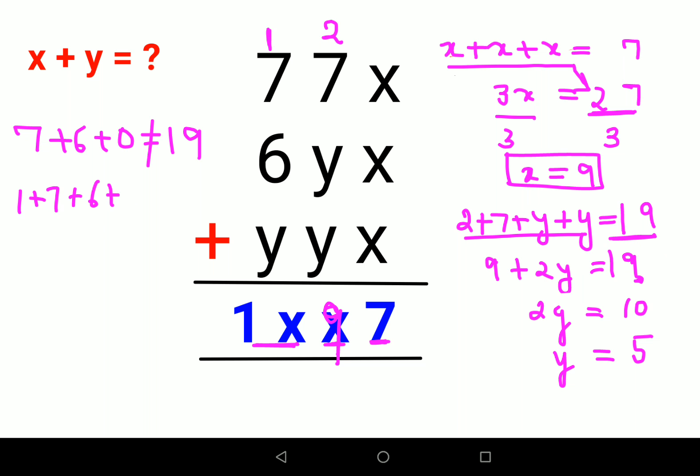Let's look at the last column. We have 1 plus 7 plus 6 - now instead of y we'll put the value of 5. Let's check whether that value is coming out to be 19. 1 plus 7 is 8, 8 plus 6 is 14, 14 plus 5 is 19. That is absolutely true. So the value of y is 5 and the value of x is 9, so the total is 14.